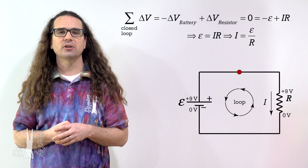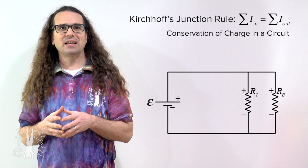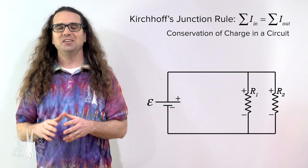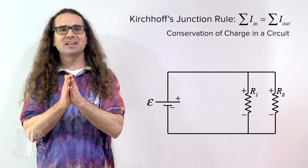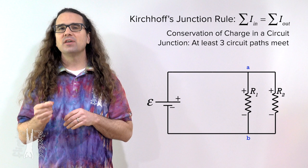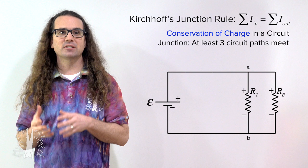Now let's add a resistor to the circuit and talk about Kirchhoff's junction rule, which is the result of conservation of charge in the circuit. The rule is that the sum of the currents entering a junction must equal the sum of the currents leaving a junction. Junctions are locations in circuits where at least three circuit paths meet. In our circuit we have two junctions, labeled A and B, and the current going into both junctions equals the current coming out. Every charge that enters a junction must come out of that junction.